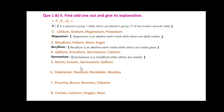Next: Boron, Arsenic, Germanium and Gallium. Friends, here Gallium is the odd one out. Gallium is a metal, while others — Boron, Arsenic and Germanium — are metalloids.